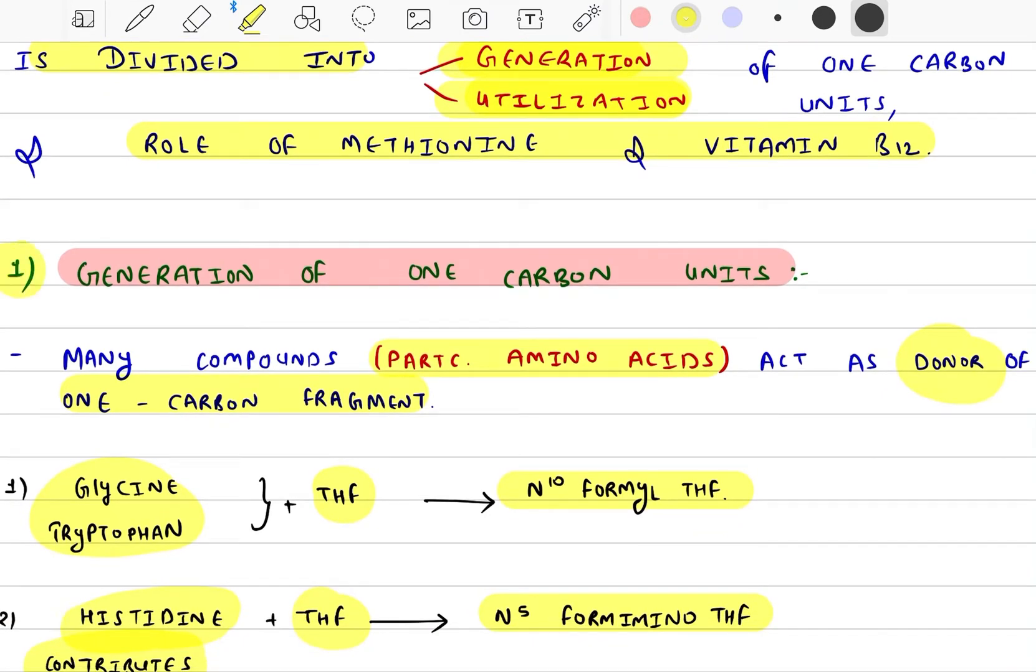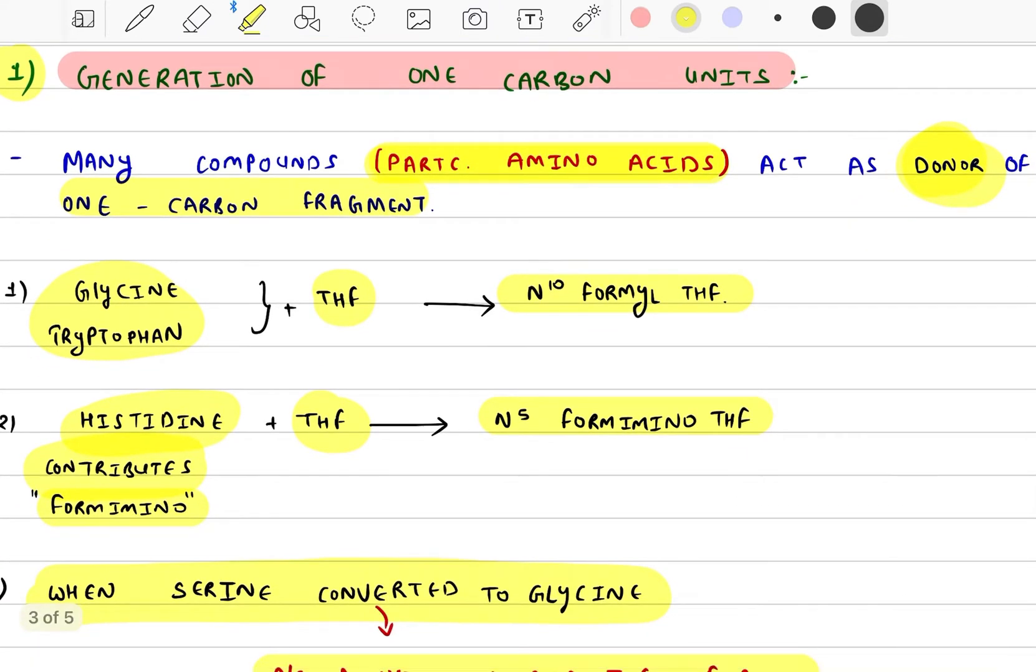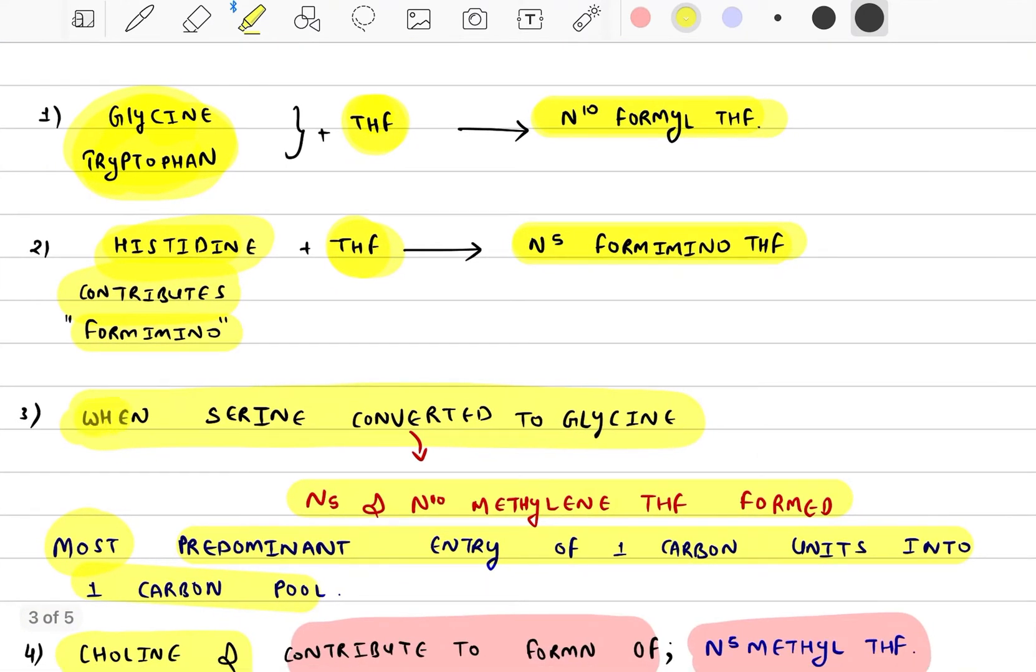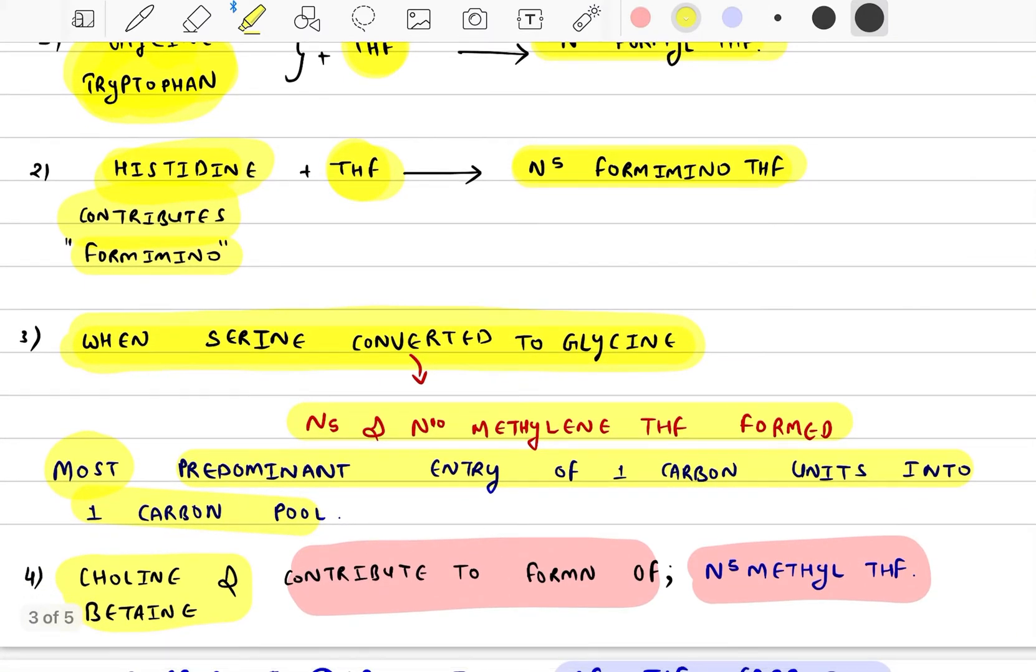First, generation of one carbon units. Many compounds, particularly amino acids, are donors of one carbon fragments. Glycine and tryptophan react with THF to form N10 formyl THF. Histidine reacts with THF to form N5 formimino THF. When serine is converted to glycine, N5 and N10 methylene THF is formed.